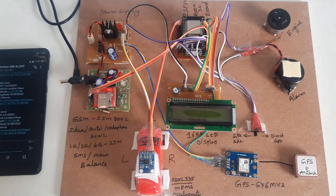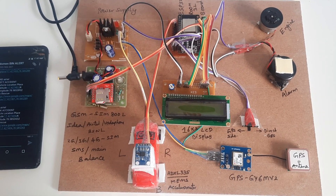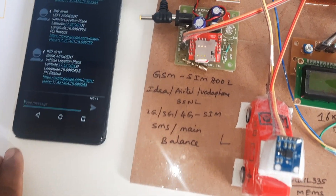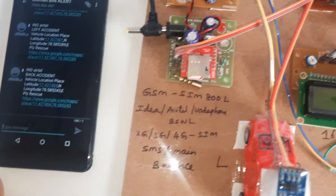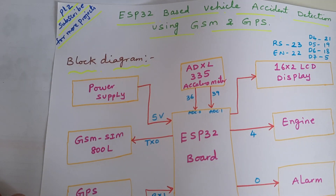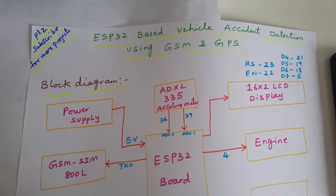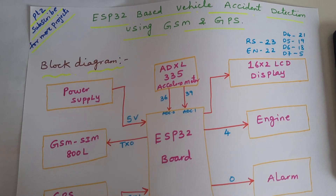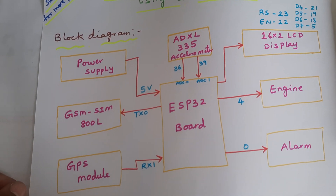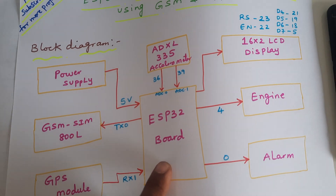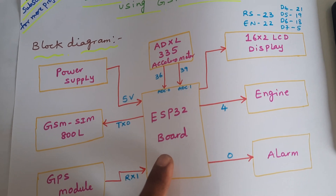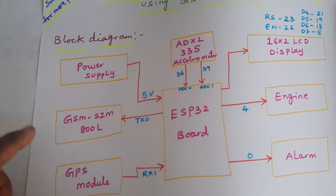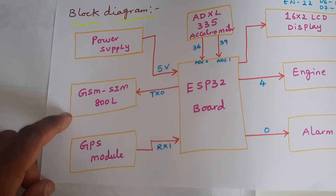Hi, we are from SVS Embedded. The project title is ESP32-based vehicle accident detection using GSM and GPS. Here we are using the ESP32 board and the RUER module board, along with a power supply and GSM SIM800.